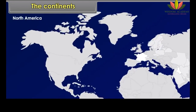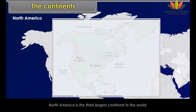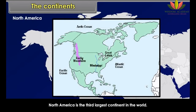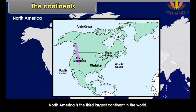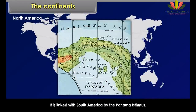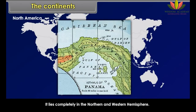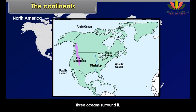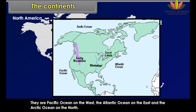North America is the third largest continent in the world. It is linked with South America by the Panama isthmus. It lies completely in the northern and western hemisphere. Three oceans surround it: the Pacific Ocean on the west, the Atlantic Ocean on the east, and the Arctic Ocean on the north.